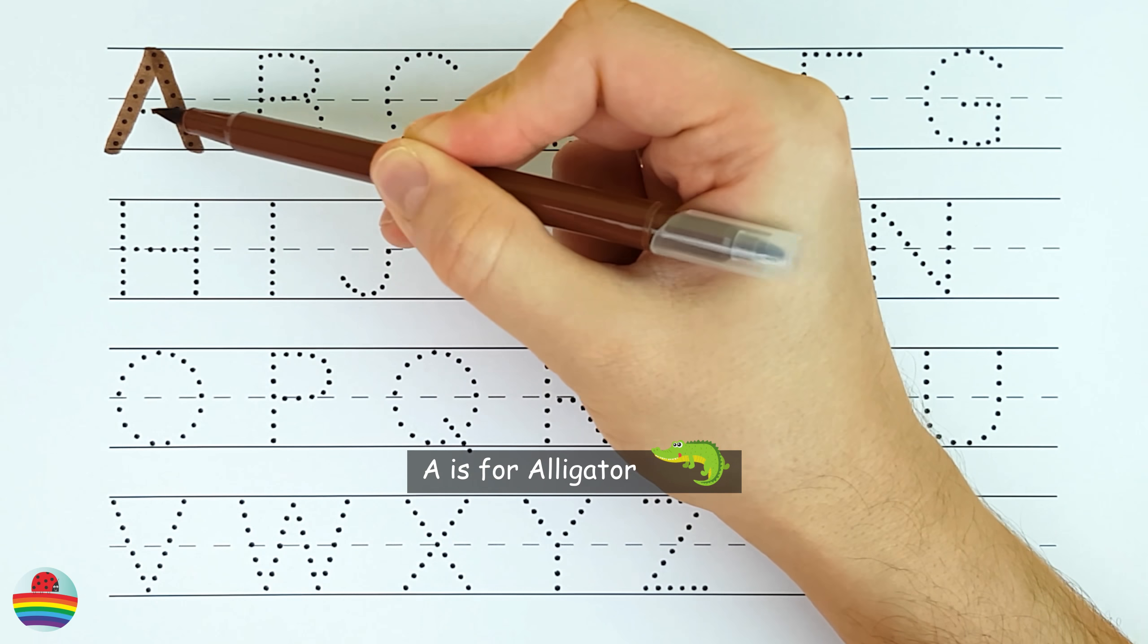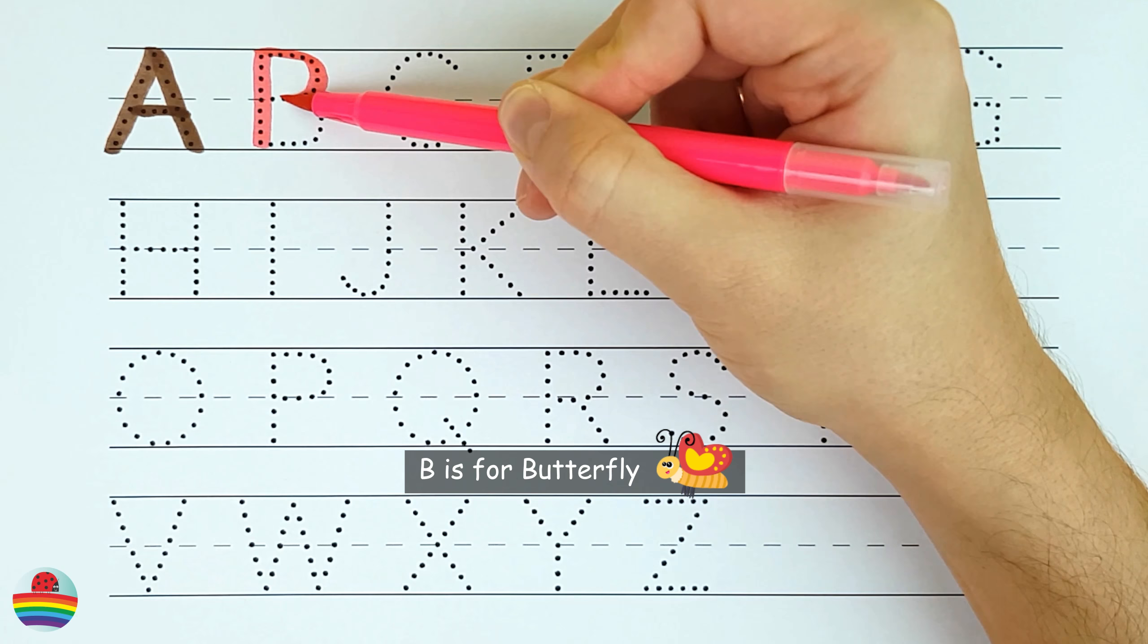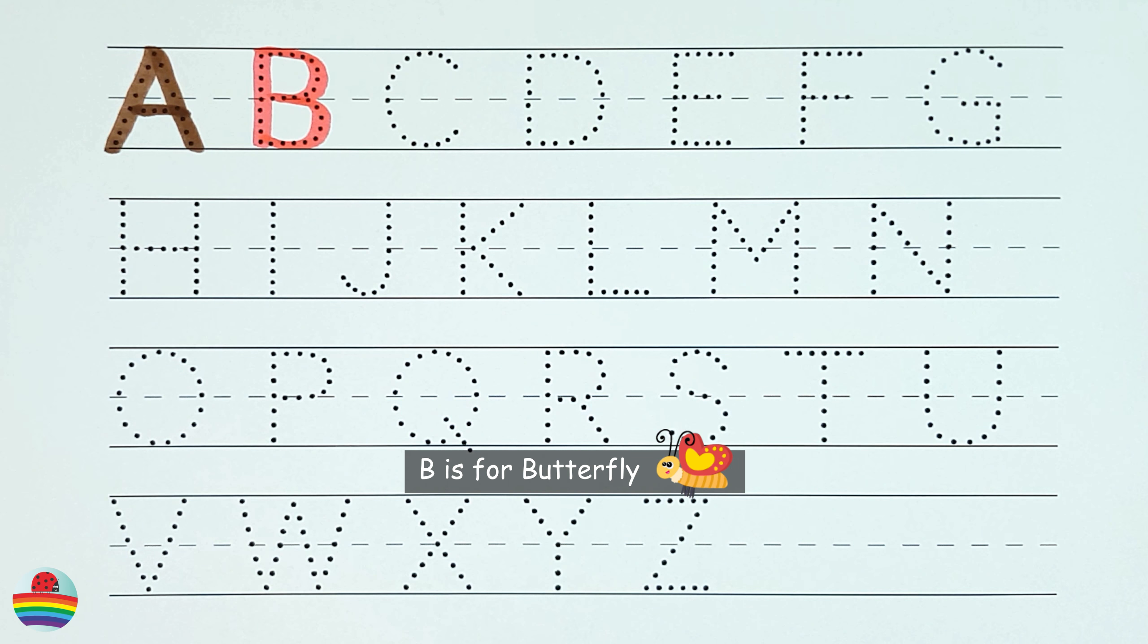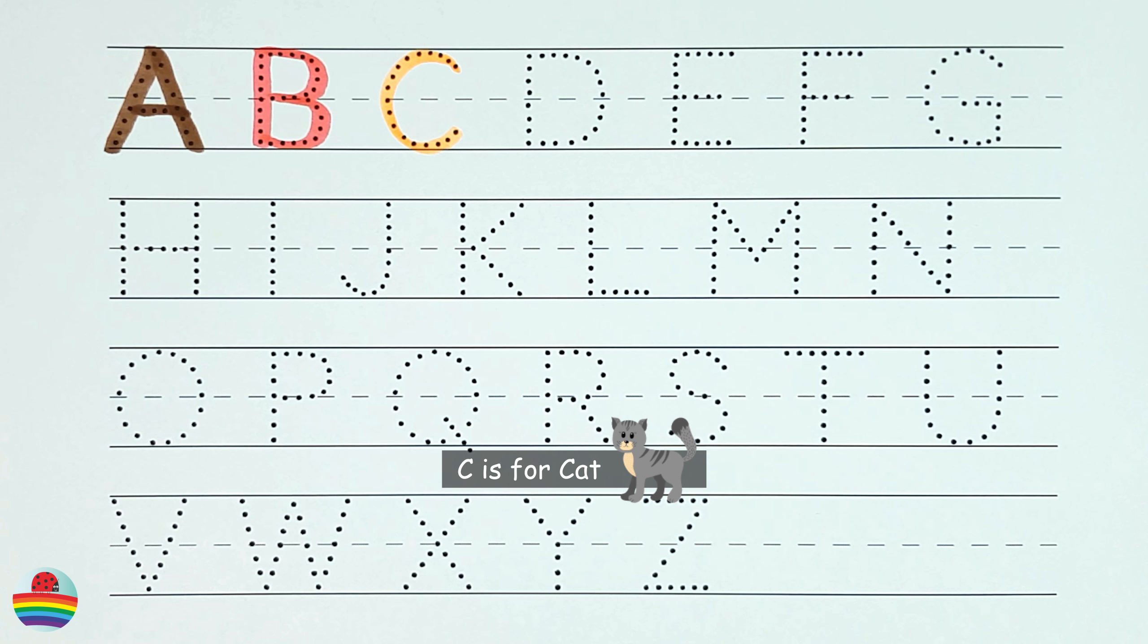A. A is for alligator. A. B. B is for butterfly. B. C. C is for cat. C.